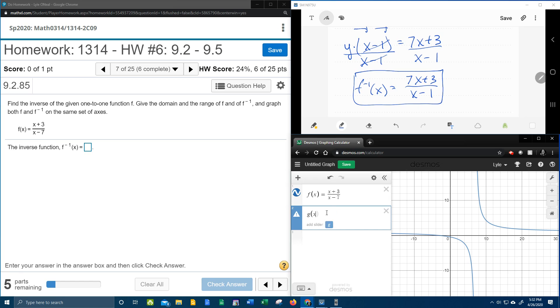Now for g of x, I'm going to use g of x for my inverse function. The numerator is 7x plus 3 over x minus 1. And if we change that color to something we can see a little bit better, maybe red, that looks good.